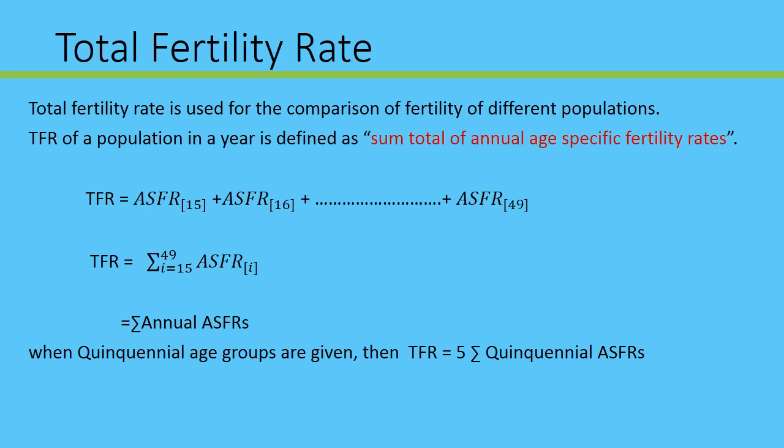When you go to annual age-specific rate, you will look at the total fertility rate. If you have 5-year age groups in this case, TFR is equal to 5 multiplied by the summation of quinquennial age-specific fertility rates. This formula is used when data is grouped in 5-year intervals.